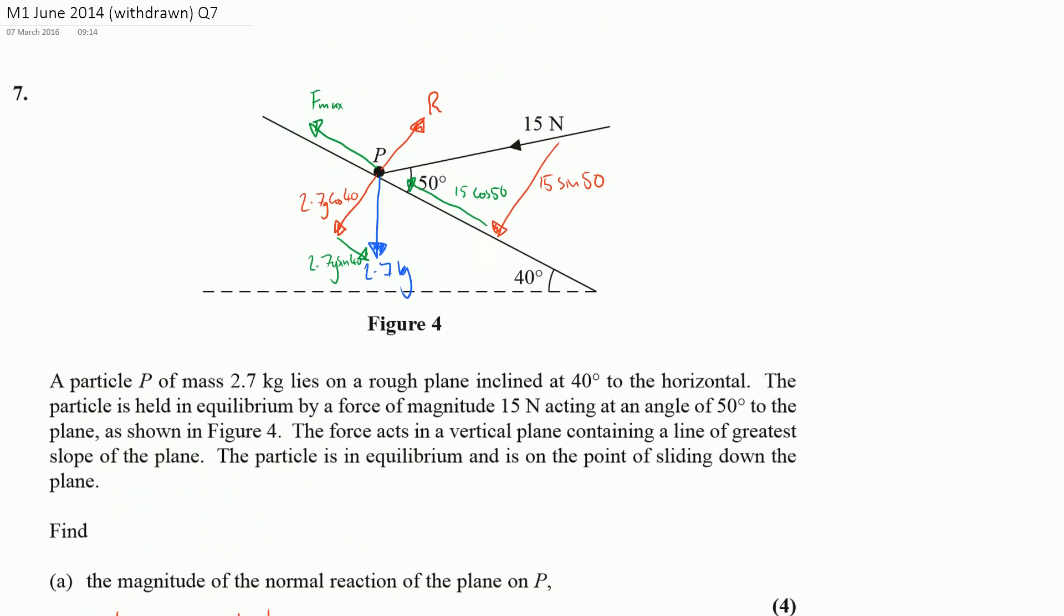So let's go back and have a look. We want all the forces acting up the plane, that's F max, and it must be equal to all the forces—oh, and the other forces acting up the plane, which is going to be 15 cos 50, because this force here is pushing in and up the plane. So I've got F max plus 15 cos 50 must be equal to 2.7 G sine 40.